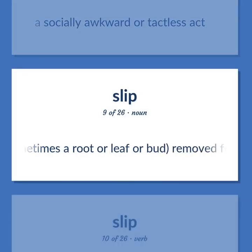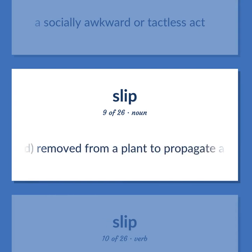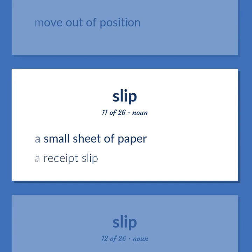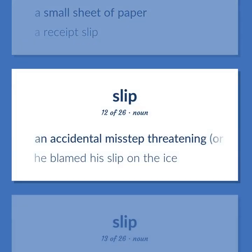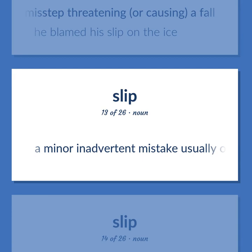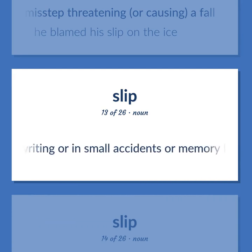A part, sometimes a root or leaf or bud, removed from a plant to propagate a new plant through rooting or grafting. To move out of position. A small sheet of paper — a receipt slip. An accidental misstep threatening, or causing, a fall — he blamed his slip on the ice.